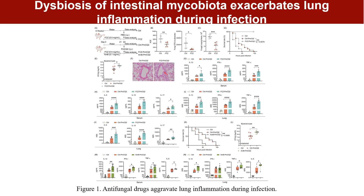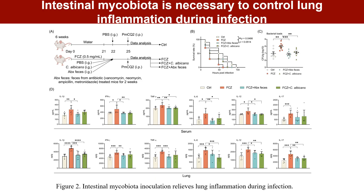Mice were treated with fluconazole and amphotericin B to induce intestinal microbiota dysbiosis. Results confirmed that intestinal microbiota perturbation using independent strategies consistently exacerbates lung inflammation and risk of mortality during infection. Recolonization of intestinal microbiota decreased the mortality, lung bacterial loads, and pro-inflammatory cytokine production, suggesting that the intestinal microbiota may be necessary to control lung inflammation during infection.